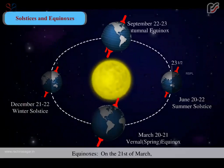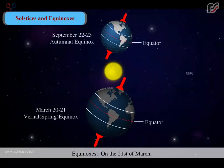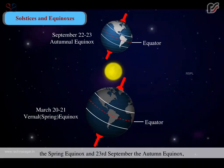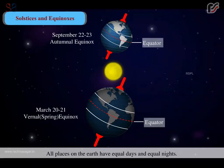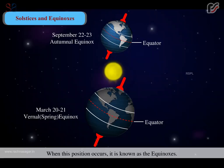Equinoxes: On the 21st of March, the spring equinox, and 23rd of September, the autumn equinox, the rays of the sun fall directly on the equator. All places on the earth have equal days and equal nights. When this position occurs, it is known as the equinoxes.